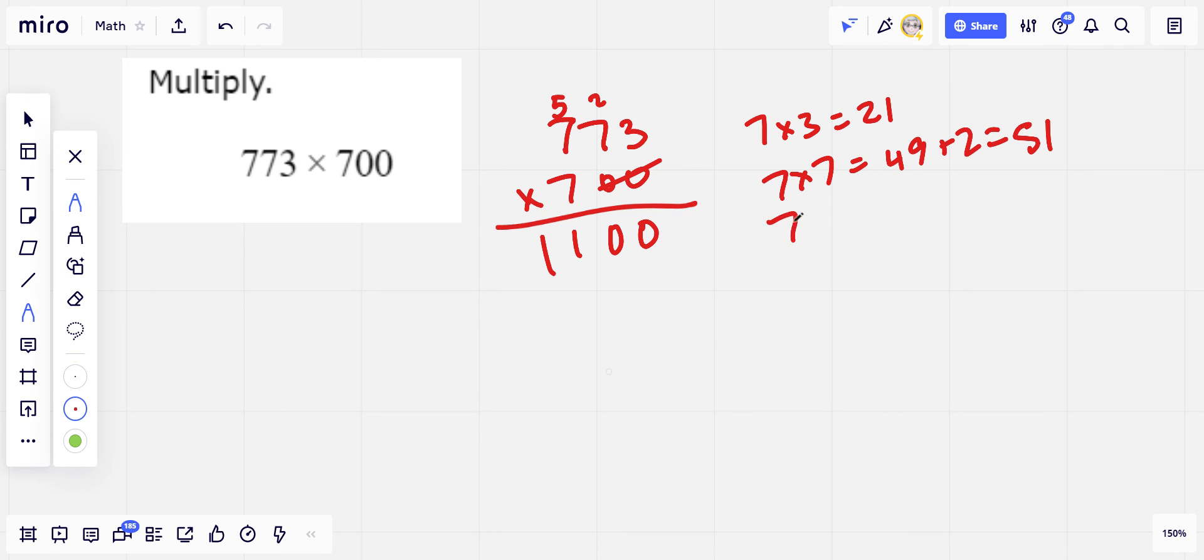And then we have 7 times 7. That's 49 again. And this time we have to add the 5. And that gives us 54. And there's nothing else to carry to. So we write the whole 54 down here. And we got 541,100.